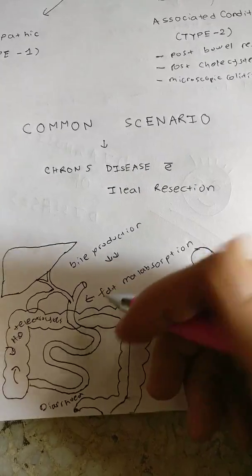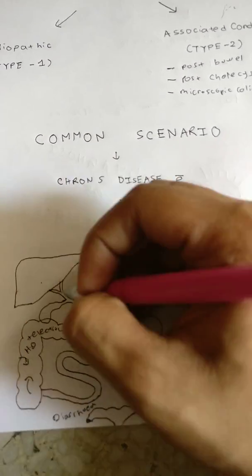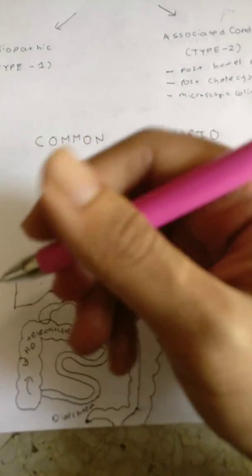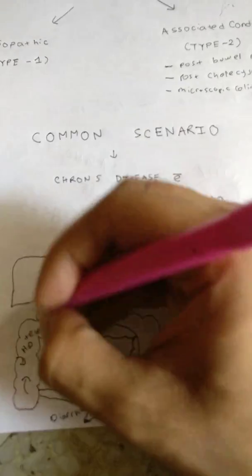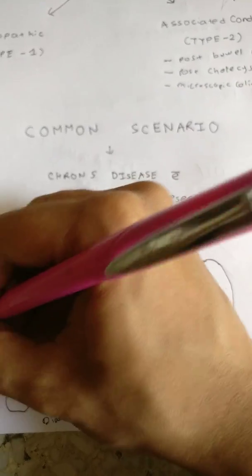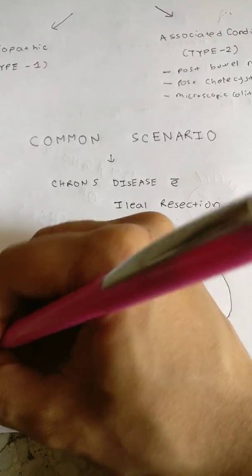Since the bile salt is not that much, in the gallbladder the bile acid pool decreases and therefore the bile becomes lithogenic and produces gallstones.